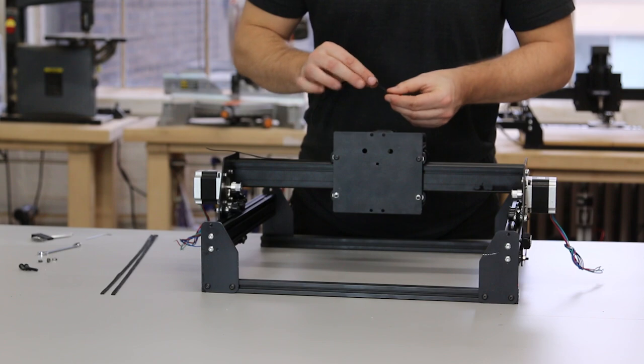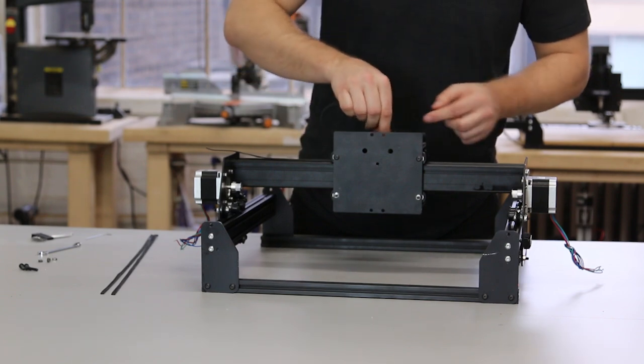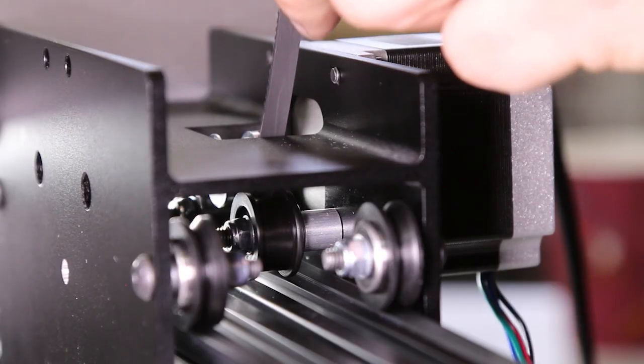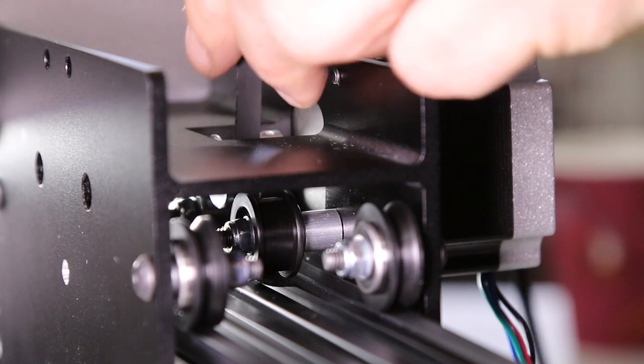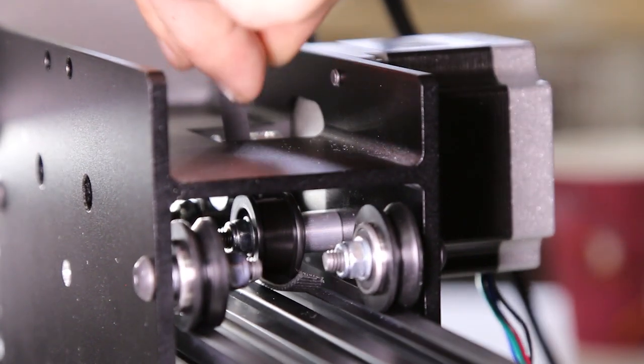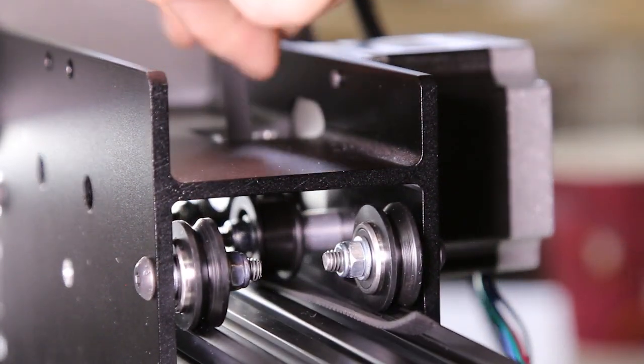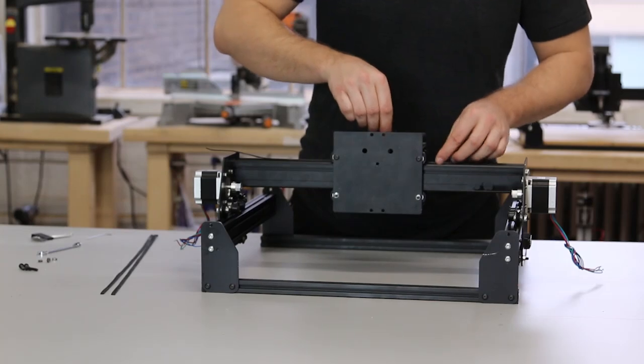You repeat the same process. Thread the belt through the other side of the X carriage. After you've threaded it, you'll notice that the belt goes under one smooth idler, over the pulley, and under the other smooth idler.